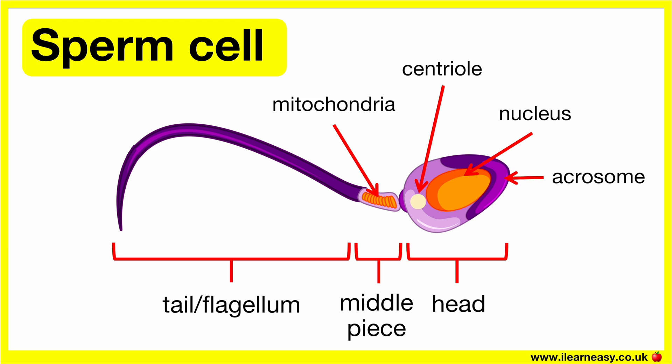The centriole plays an important role in pre- and post-fertilisation. Sperm cells also contain many mitochondria which release energy for movement. The sperm cell's long tail allows it to move towards the egg cell. Sperm cells are produced in large numbers to help increase the chance of fertilisation.